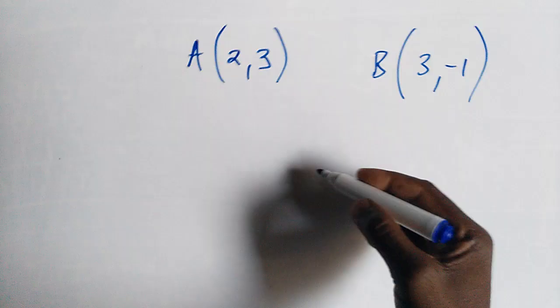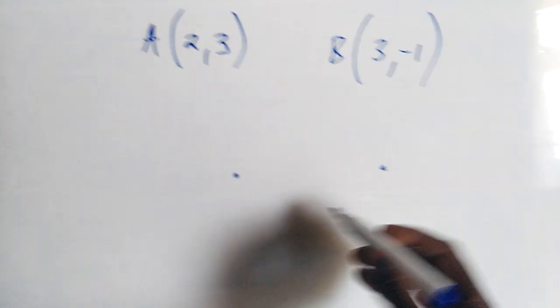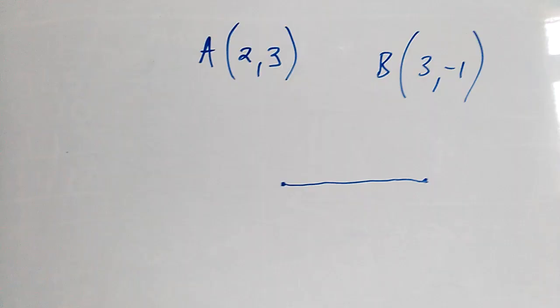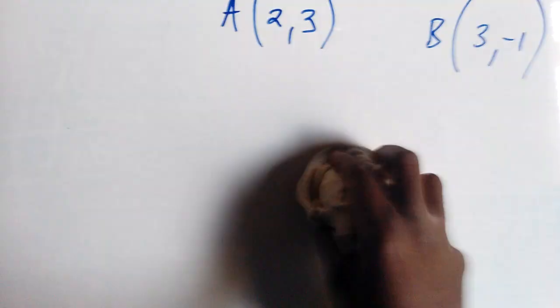We want to make a line by joining these two coordinates. Remember, we're talking about a linear equation. If these are coordinates, the moment we join them, we are forming what is known as a line, supposed to be a straight line.